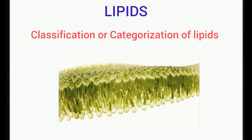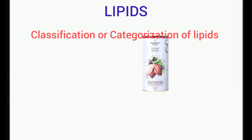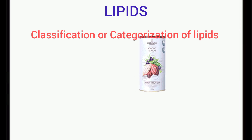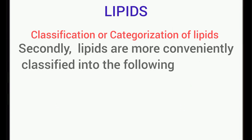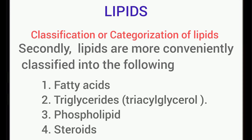How do we classify lipids? Lipids can be classified in two different ways in biochemistry. Firstly, lipids can be classified into simple lipids such as fats, oils, and wax, or complex lipids such as phospholipids and glycoproteins. Secondly, lipids are also more conveniently classified into the following categories.